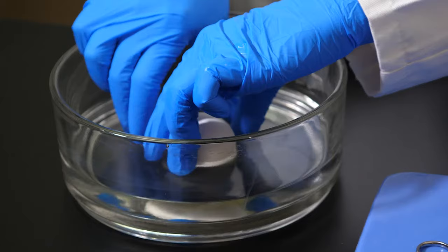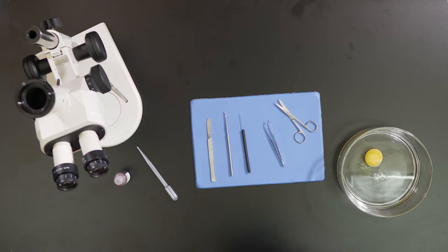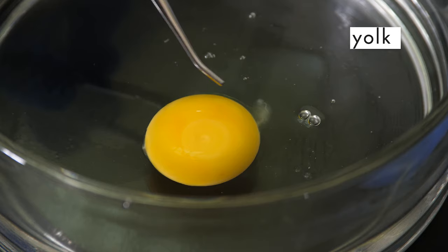Now that we have allowed the saline solution to saturate the egg, we need to separate the shell from the egg. Great! Now that we have separated the egg from the shell, let's identify some of the embryonic structures.